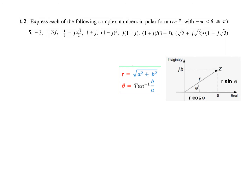We'll calculate R and theta using this formula. The basic concept of polar and rectangular form is that the real axis is a, the imaginary axis is jb, and R is the magnitude of the polar form. Also, a is written as r cos theta and b is written as r sin theta.